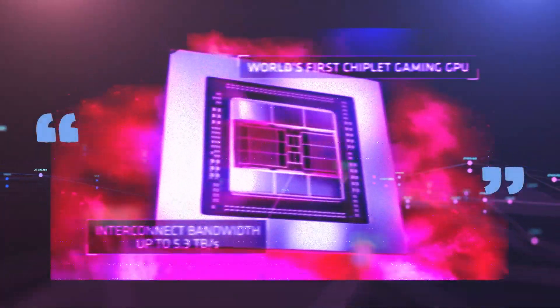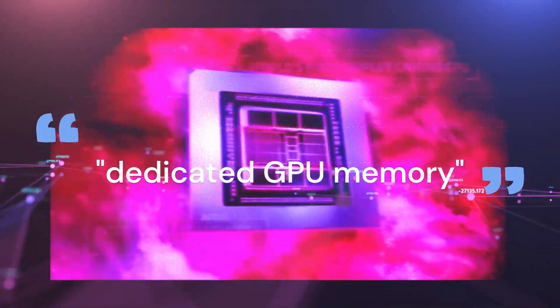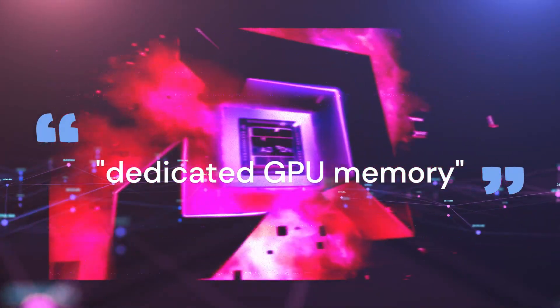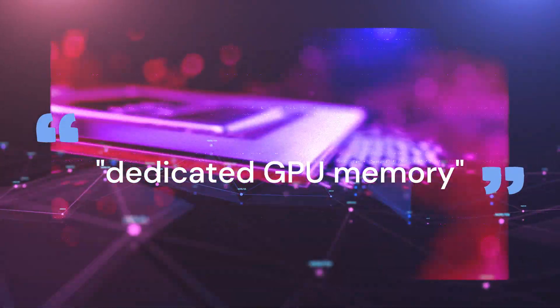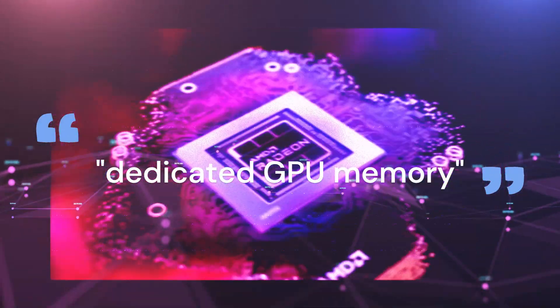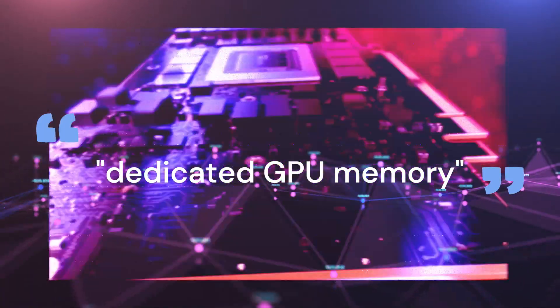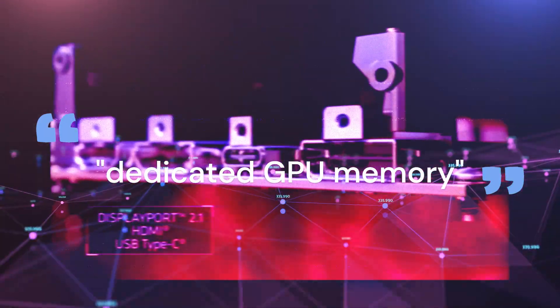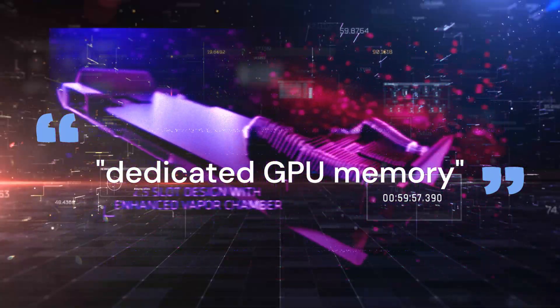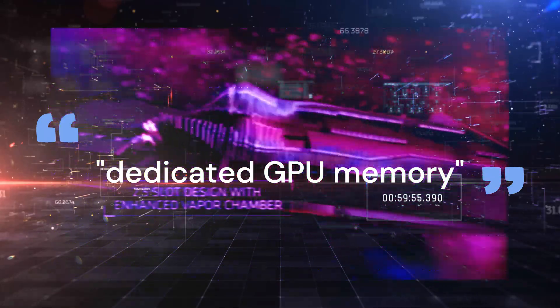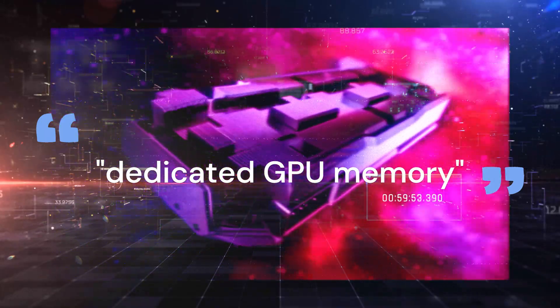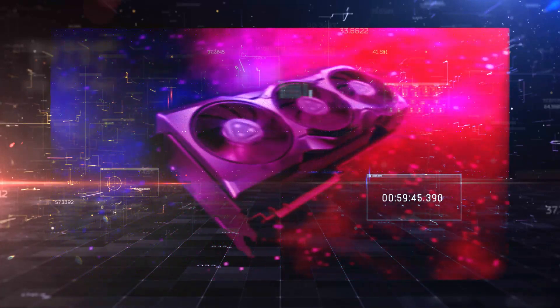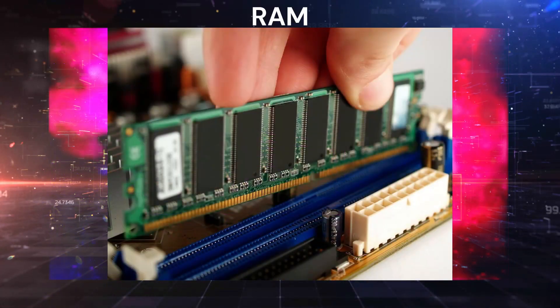Dedicated GPU memory refers to the portion of a GPU's total memory that is exclusively reserved for the graphics card and is not shared with the system RAM of the computer. Dedicated GPU memory is typically faster and more efficient for graphics-intensive tasks, since it can be accessed directly by the GPU without going through the system RAM.